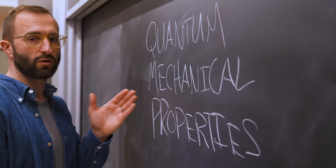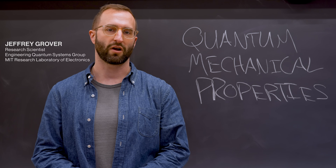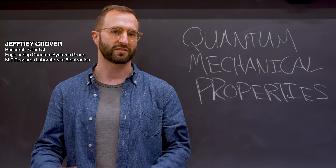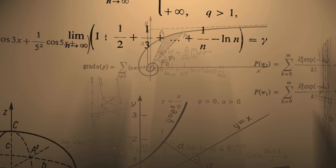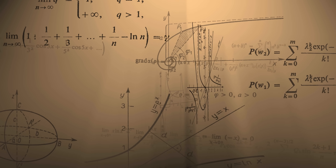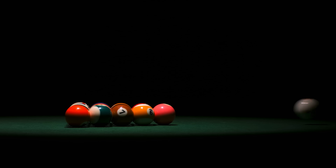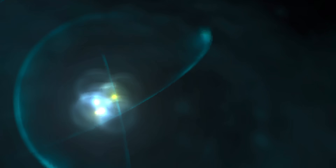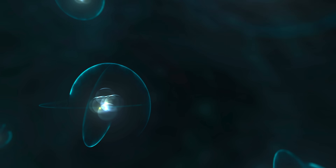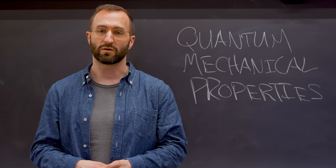Quantum mechanical properties — what do we mean by that? What we're really trying to do is describe what's happening at the smallest scales of our universe. It turns out that if you try to use the physics and mathematics of our classical world — say, how do planets move around the sun or billiard balls bounce on a pool table — that math breaks down when we go to describe how atoms interact with one another, or how an electron moves around the nucleus of an atom. And we need to use something different, which we call quantum mechanics.